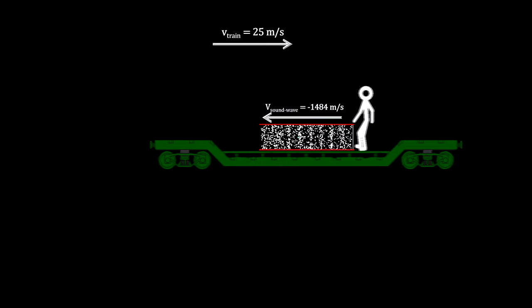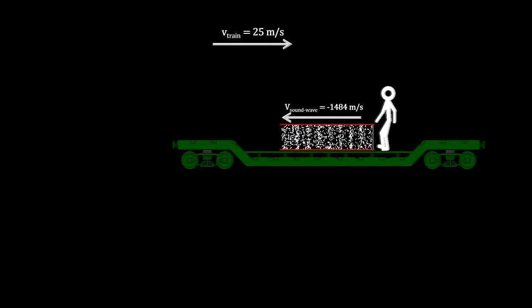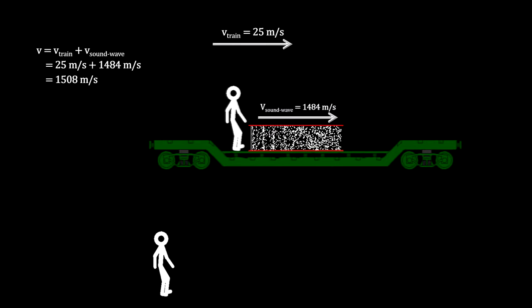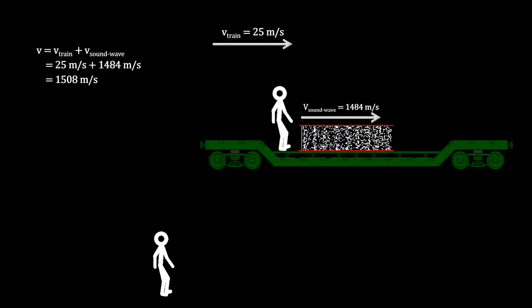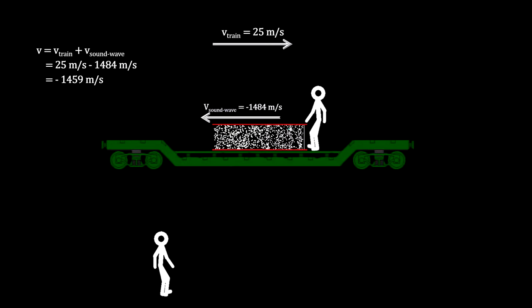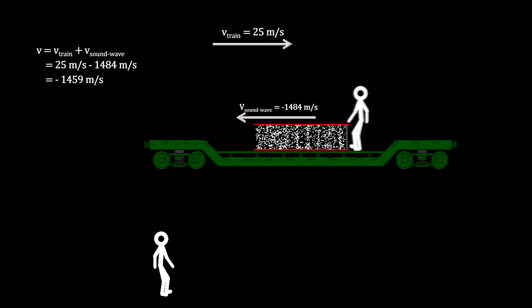The speed of sound in water is around 1,484 meters per second. The person on the ground would measure the forward moving wave at 25 meters per second faster than that, and he would measure the backward moving wave at 25 meters per second slower than that.